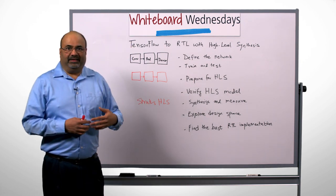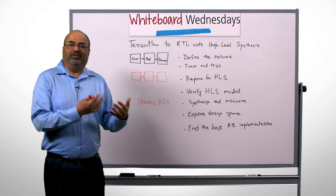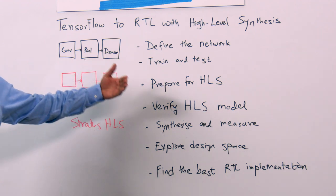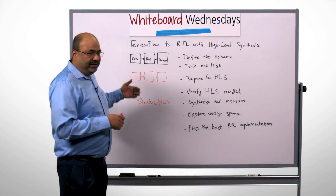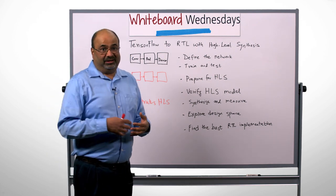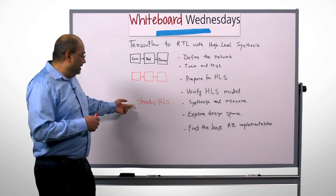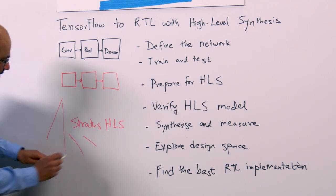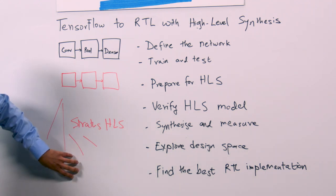For example, you can say that I want a fast implementation that gives me the results as quickly as possible. How much area is that going to take? I can answer that question within minutes by running this through Stratus HLS followed by Genus logic synthesis and Joules power analysis. I can also create an implementation that is slow but small area, less power. And I can trade this off using different constraints in the high-level synthesis flow. So the end of this flow is a set of different implementations of my network that all have different characteristics, and I can find the best solution that meets my needs.